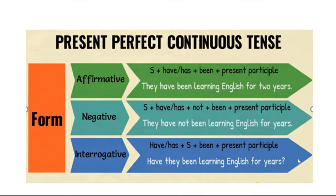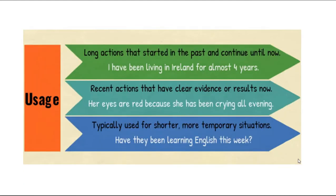Present perfect continuous — affirmative, negative, and interrogative. Usage: long actions that started in the past and continue until now — 'I have been living in Ireland for almost four years.' Recent actions that have clear evidence or results now — 'Her eyes are red because she has been crying all evening.' Typically used for shorter, more temporary situations — 'Have they been learning English this week?'